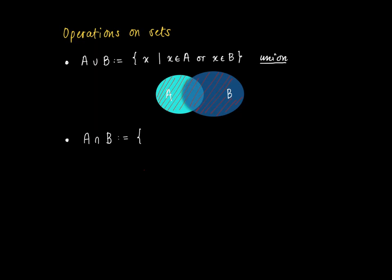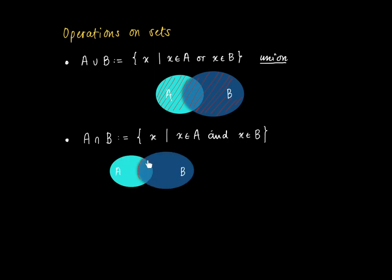A similar thing is the intersection of two sets. So A intersect B is the set of all x's that are both in A and in B. So as a third example, we can look at